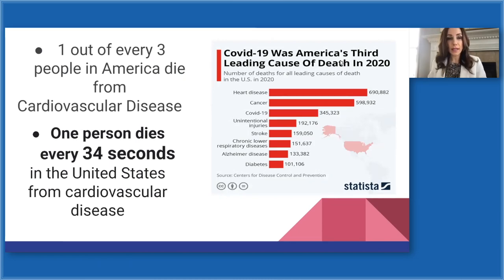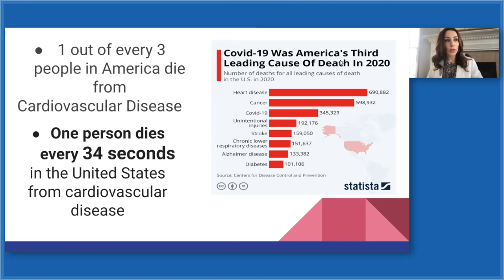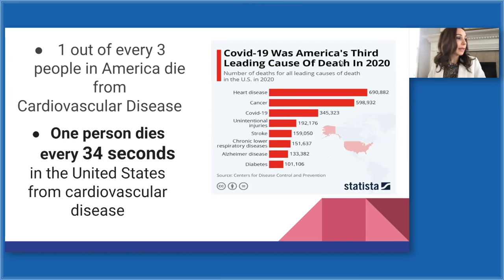Some sobering statistics: one out of every three people in America die from cardiovascular disease. One person dies every 34 seconds in the United States. In 2020, it looked like COVID was going to be — for the first time since measles as a communicable disease — predicted to come in first for the leading cause of death. But it didn't come anywhere close to heart disease. The COVID numbers were about 345,000, and heart disease was nearly double at 690,000, with cancer coming in a close second.